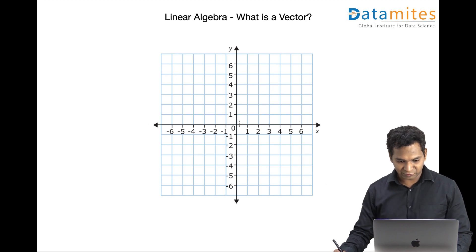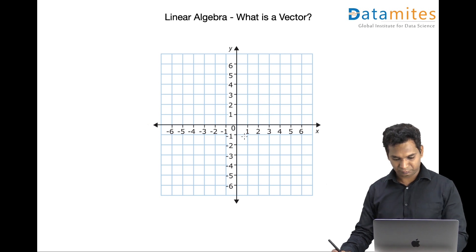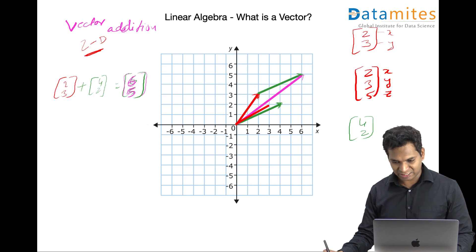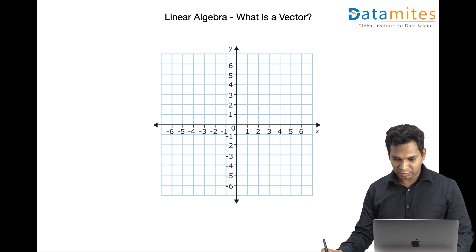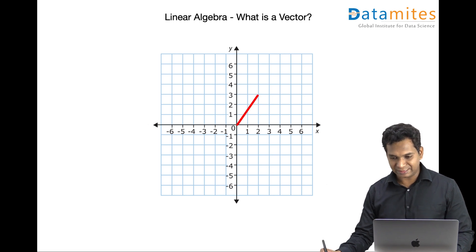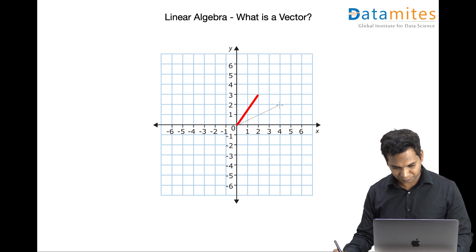There is a vector which is, let's say, three comma two. And another vector which is... The first vector is actually two comma three. That's what we have taken before. And the second vector is four comma two.